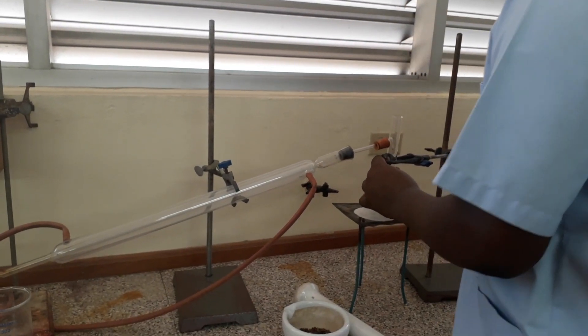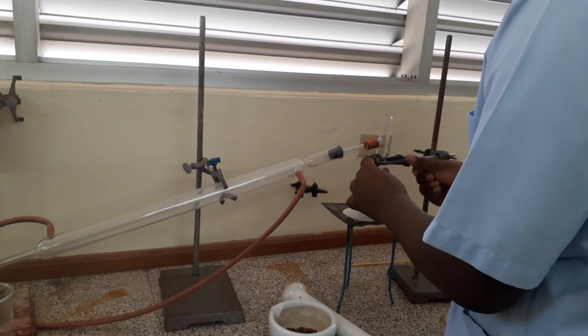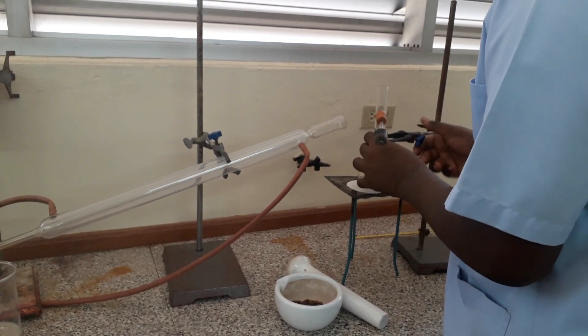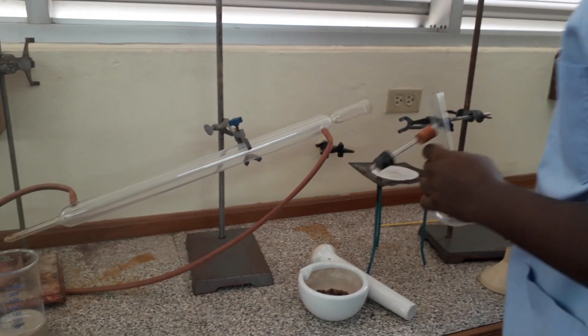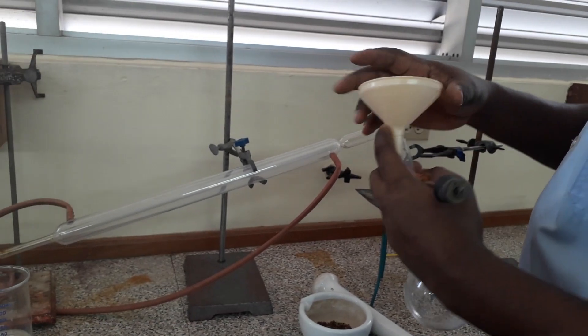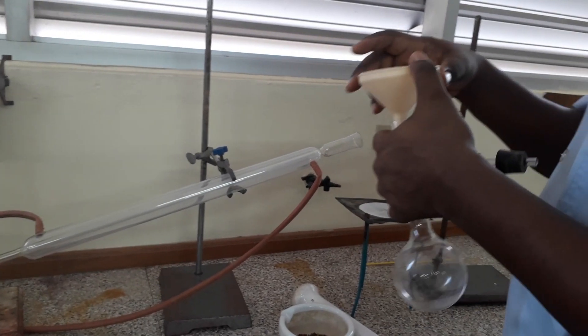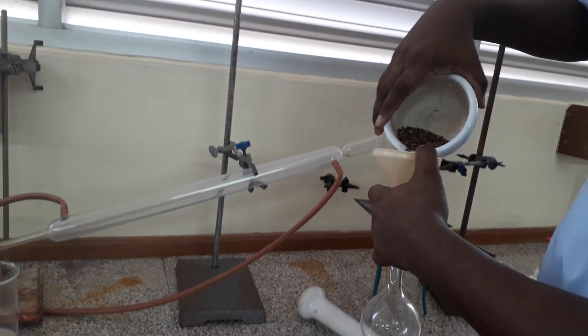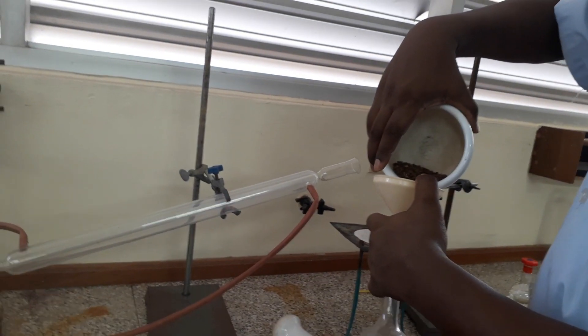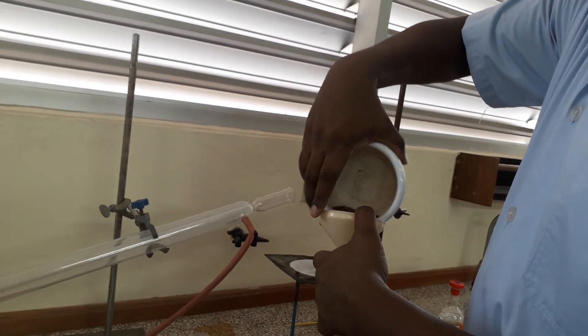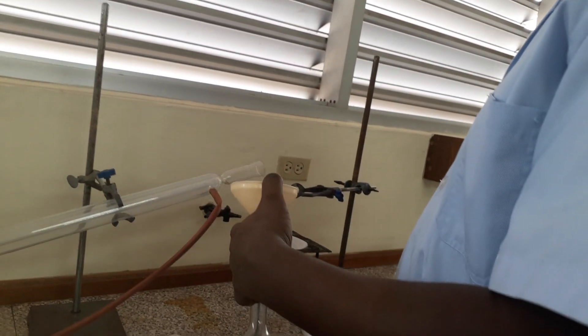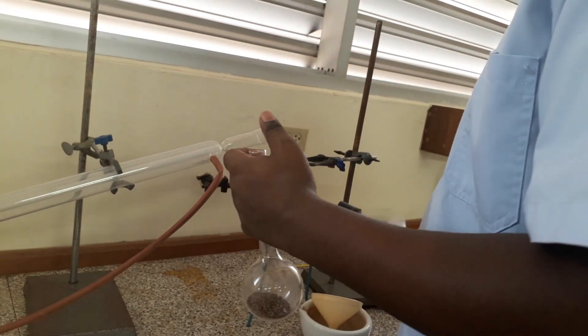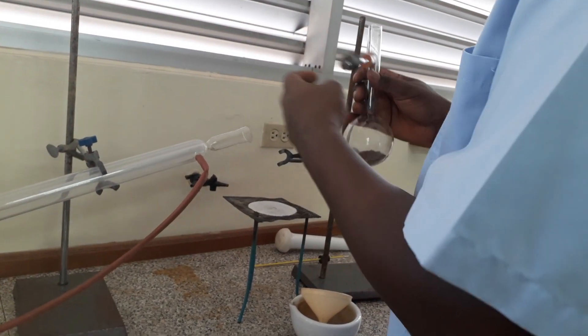So now I'm going to put the crushed cloves into my distillation flask. I'm going to use a funnel and try to make sure that it doesn't go down into my distillation flask.